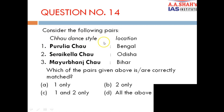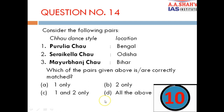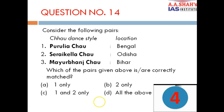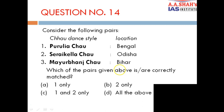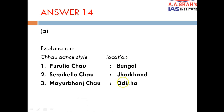Question 14: Consider the following pairs — Chhau dance style and location. Purulia Chhau: Bengal; Seraikela Chhau: Orissa; Mayurbhanj Chhau: Madhya Pradesh/Bihar. Which pairs are correctly matched? The correct answer is A — one only. Purulia Chhau is correctly paired with Bengal. Seraikela Chhau is from Jharkhand, not Orissa. And Mayurbhanj Chhau is from Odisha, not Madhya Pradesh or Bihar.